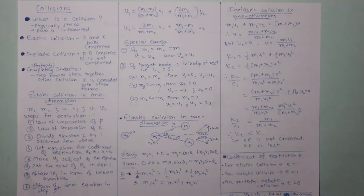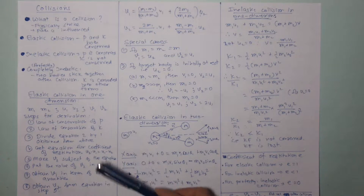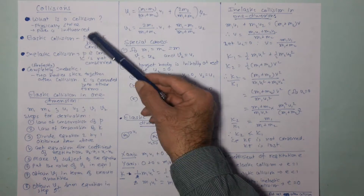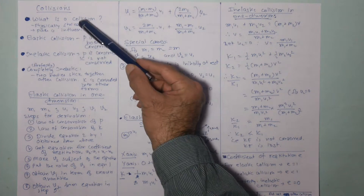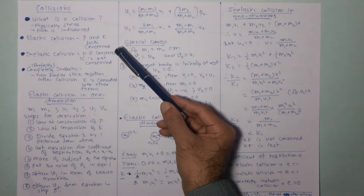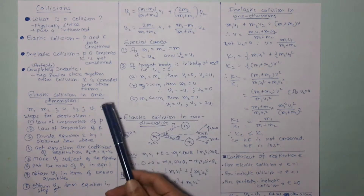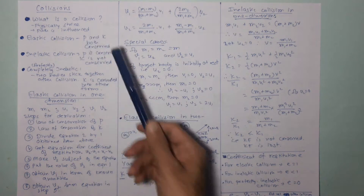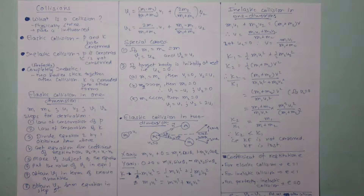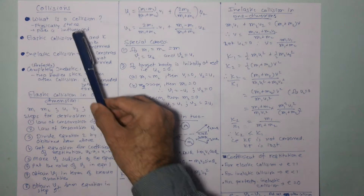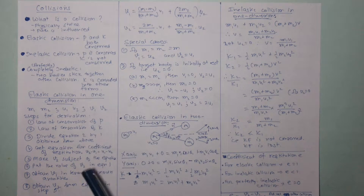In this video we will do a quick revision of the concept of collision. A collision occurs when two objects physically come in contact with each other, strike each other, or if their path is influenced — as in the case of electrically charged items.